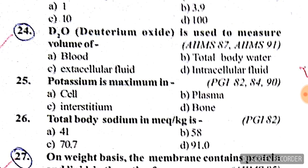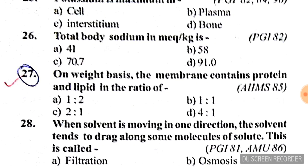Question number 24: deuterium oxide (D2O) is used to measure the volume of — the answer is total body water. Remember: water is H2O and deuterium oxide is D2O. On a weight basis, the membrane contains protein and lipid in a ratio of 2:1. Answer for question 27: C is correct.